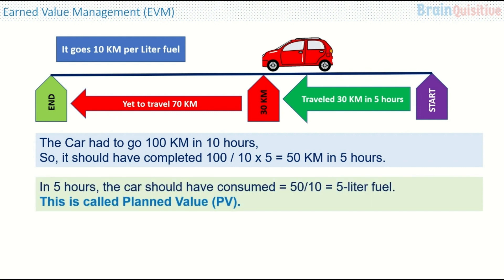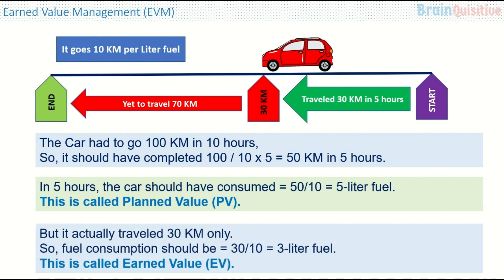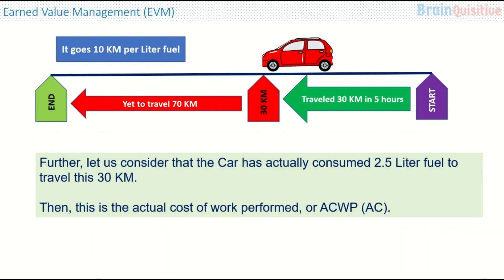But the car has travelled only 30 km. In 5 hours, the car should have consumed 50 divided by 10 — the distance to be travelled divided by the mileage — that is 5 litres of fuel. This is called the planned value. But it has actually travelled 30 km only, so fuel consumption should be 30 divided by 10, that is 3 litres of fuel. This is called the earned value. If the car actually consumed 2.5 litres of fuel to travel 30 km instead of 3 litres, then that is the Actual Cost of Work Performed, or ACWP.